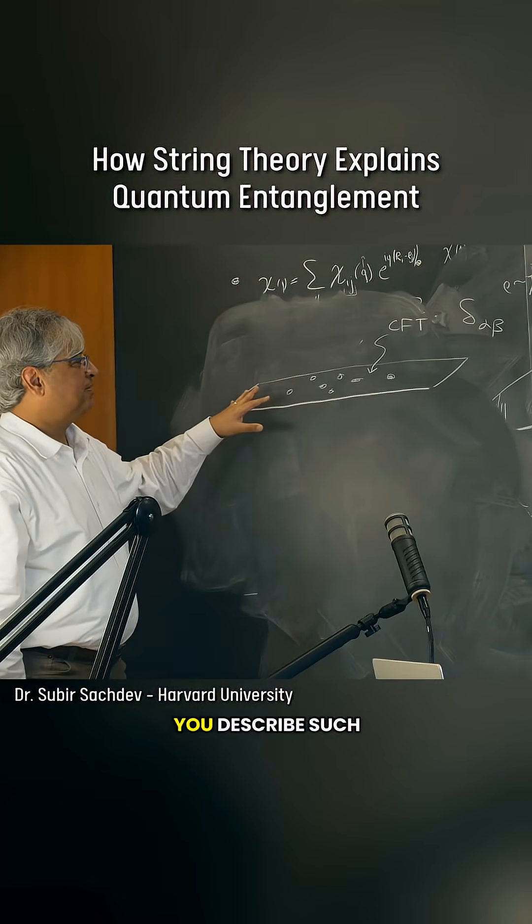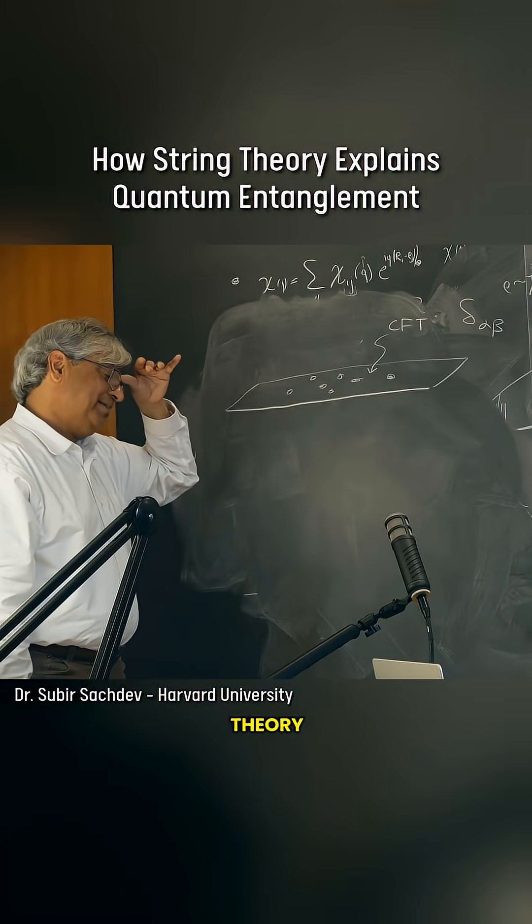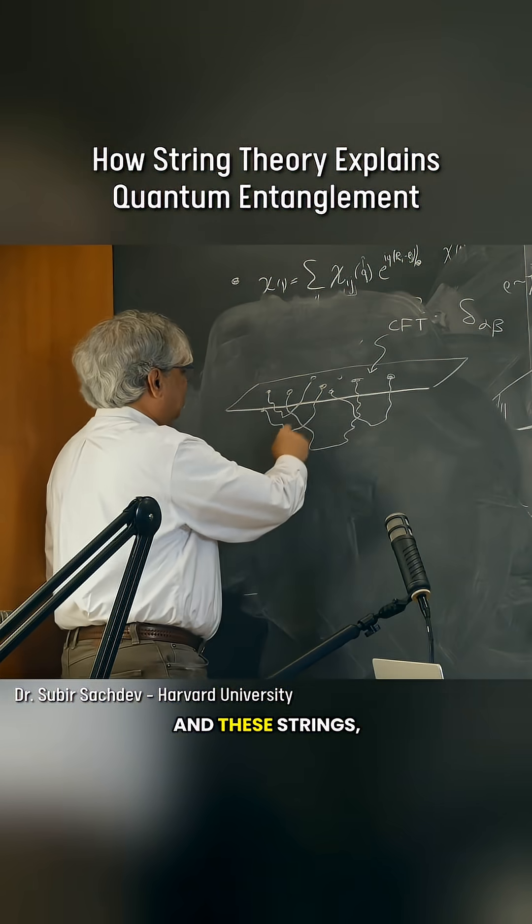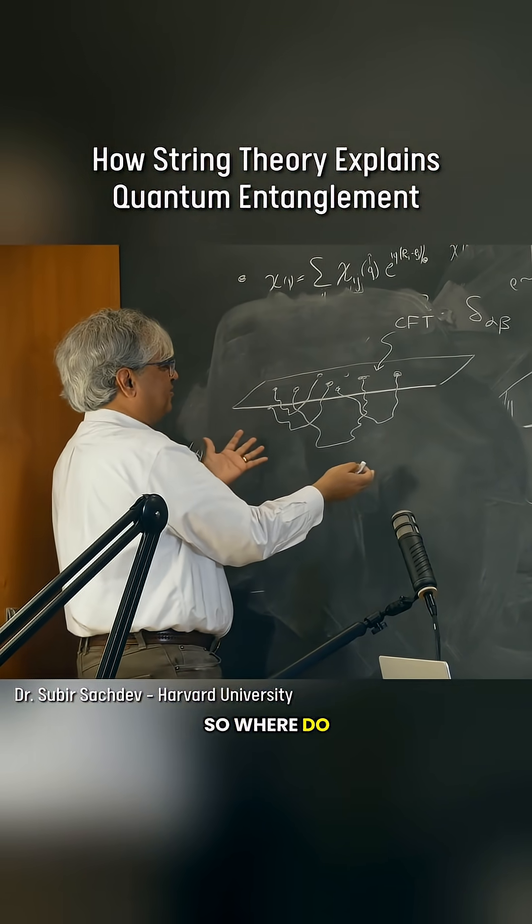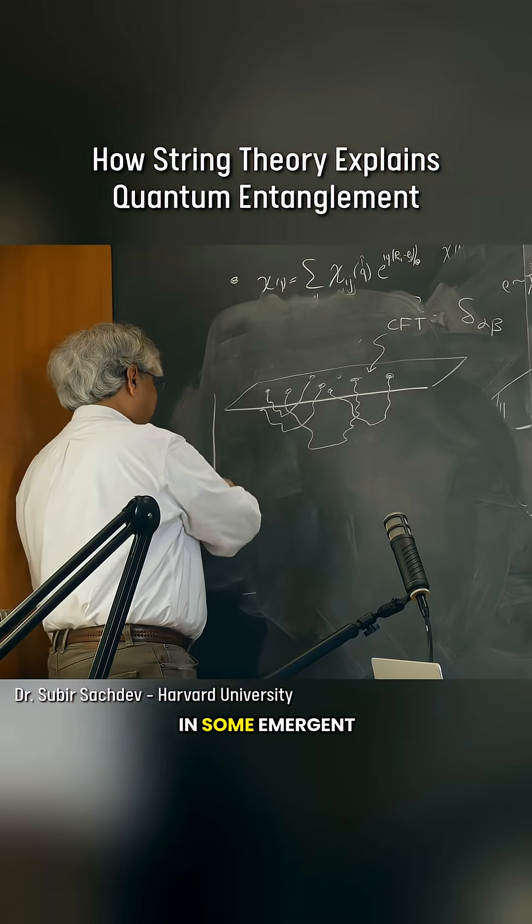So in string theory the way you describe such a conformal field theory is your particles really are at the end of some string and these strings the way they connect up here is what's mediating the entanglement. So where do these strings live? Well they live in some emerging directions.